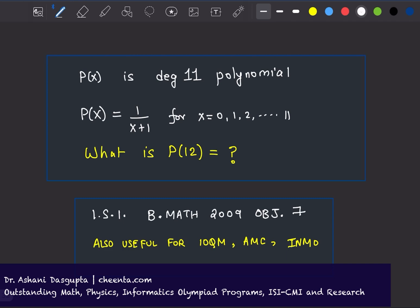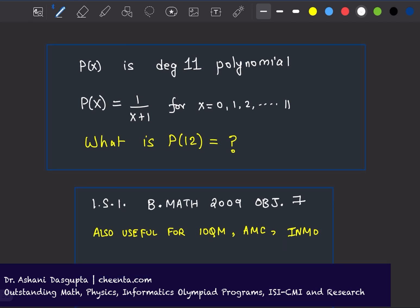The problem says that P(x) is a degree 11 polynomial, and P(x) equals 1 over x plus 1 for x equal to 0, 1, 2, up to 11.